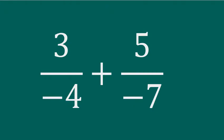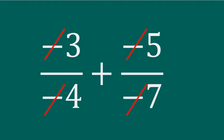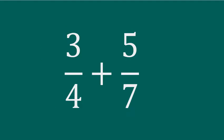If someone gives you a negative denominator — that is, negative 4 or negative 7 in this case — then bring it up in front of the numerator by multiplying by negative 1 in both the numerator and denominator. Or else, if someone gives you negatives in both the numerator and denominator, then it is very easy to cancel them. Then we get the original fractions three-fourths and five-sevenths.